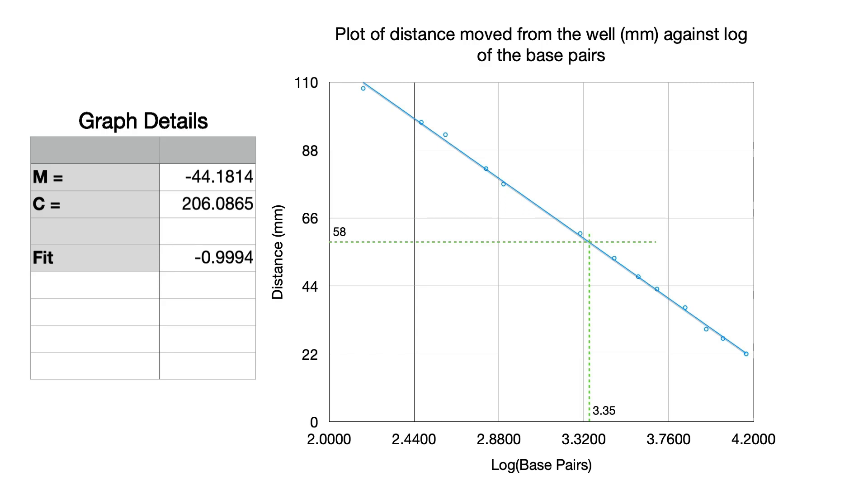If we look at the correlation we've got a correlation of minus 0.9994 which is good so it's a good fit. And then we can put in our unknown, 58, so we're just using the y equals mx plus c equation.